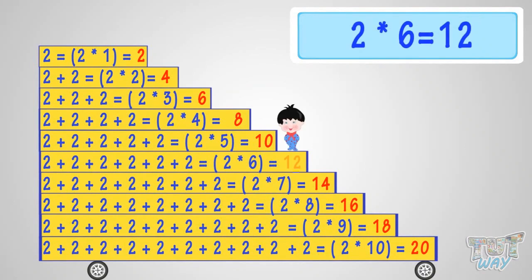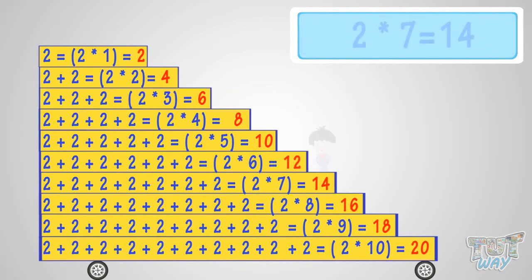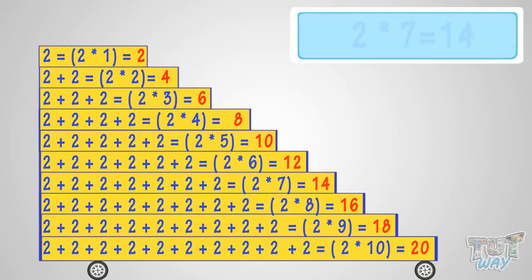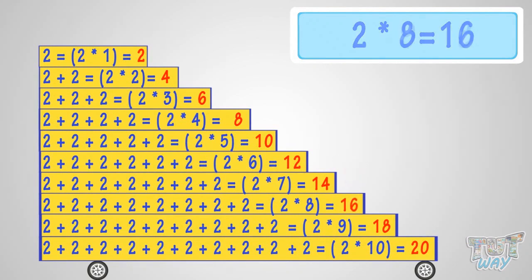Two times six is twelve. Two times seven is fourteen. Two times eight is sixteen. Two times nine is eighteen.